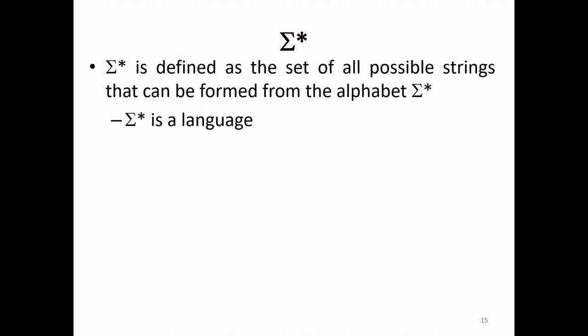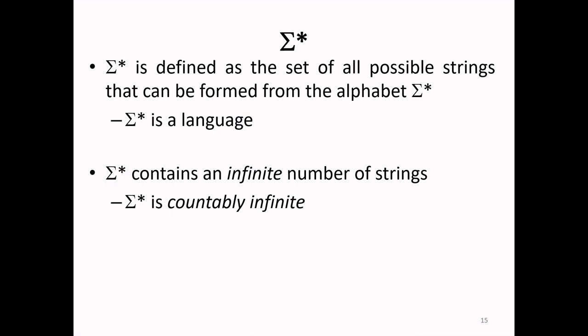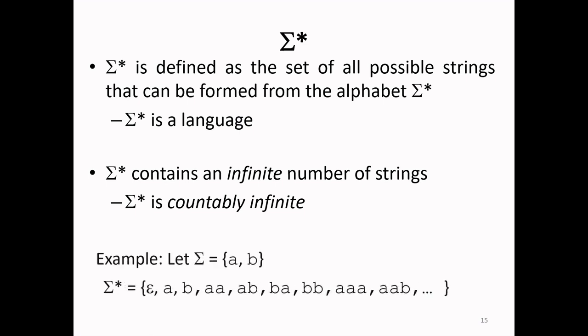What is Σ*? Σ* is defined as the set of all possible strings that can be formed from the alphabet Σ. So, Σ* is a language which contains an infinite number of strings. Then, Σ* is countably infinite.